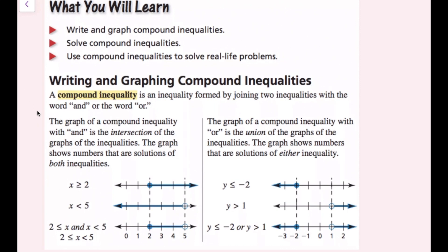The graph of a compound inequality with AND is the intersection of the graphs of the inequalities. The graph shows the numbers that are solutions of both inequalities. So if we have X is greater than or equal to 2, and X is less than 5, and then their graphs, we see that they share this portion.